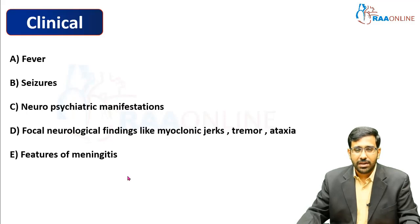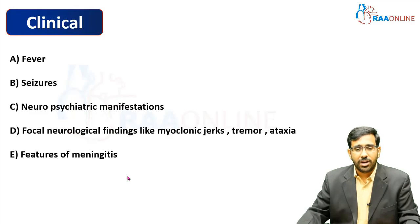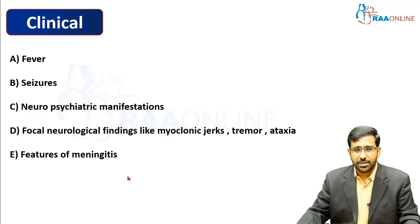Coming to the clinical manifestations: being an infectious etiology, the patient can have fever, episodes of seizure, and neuropsychiatric manifestations ranging from delirium to coma. Focal neurological findings such as myoclonic jerks, tremor, and ataxia may be present. Features of meningitis can also be present, including nuchal rigidity, positive Brudzinski sign, and positive Kernig's sign.